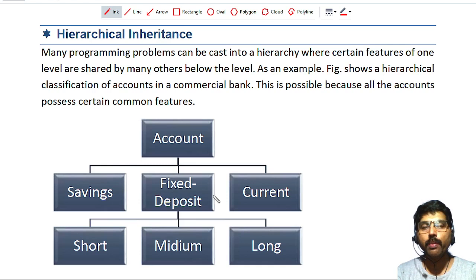Instead of putting these features separately in each class, the common features can be put in a separate class. That class can be inherited by all the other classes. This type of concept is called hierarchical inheritance.